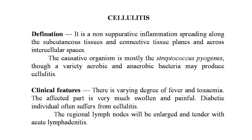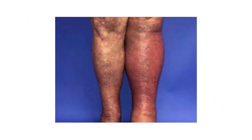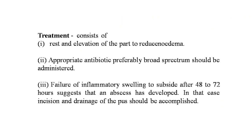The next point is cellulitis. It is a non-suppurative inflammation spreading along subcutaneous tissue and connective tissue planes and across intercellular spaces. The causative organism is mostly Streptococcus pyogenes, though a variety of aerobic and anaerobic bacteria may produce cellulitis. Clinical features: varying degrees of fever and toxemia; the affected part is very much swollen and painful. Diabetic individuals often suffer from cellulitis. Regional lymph nodes will be enlarged and tender with acute lymphadenitis. Treatment: rest and elevation of the part to reduce edema; appropriate broad-spectrum antibiotics. Failure of the inflammatory swelling to subside after 48 to 72 hours suggests that an abscess has developed, in which case incision and drainage of pus should be accomplished.